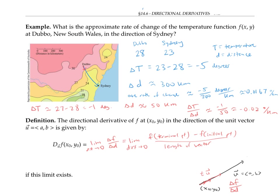Since u is a unit vector, the length of t times u is just t. And since this vector starts at the initial point (x₀, y₀), it will end at the terminal point (x₀ + ta, y₀ + tb), since a and b are the components of u.